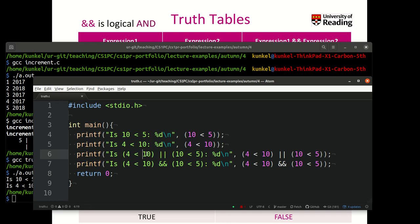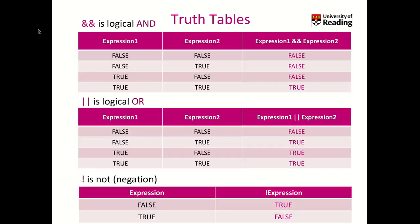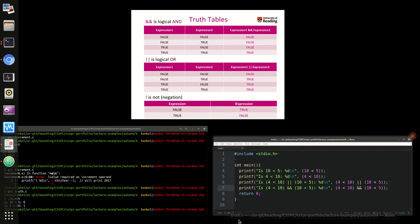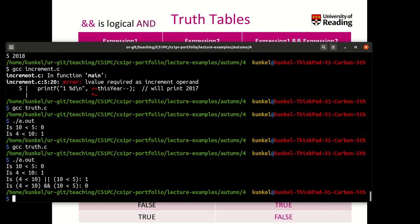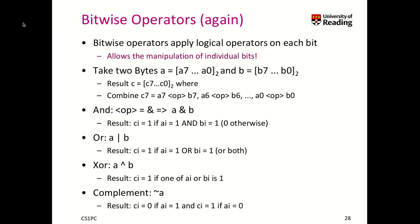Is one of them true? Yes — 4 is smaller than 10. The AND operator means both of them have to be true. Are both true? No, 5 is not smaller than 5, so it will be false. Expression one is true, expression two is false — so we get true for the OR operator, and false for the AND operator. The result is one for OR and zero for AND, exactly as we expected.